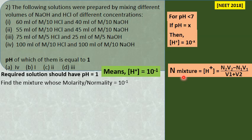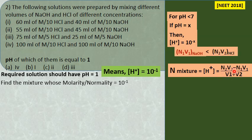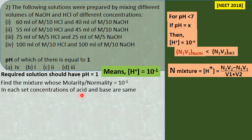The formula: concentration of H⁺ = (N2V2 minus N1V1) divided by total volume, where N2V2 of acid must be more than N1V1 of NaOH. Looking at the concentrations given: N/10 = 0.1 in each case. Volumes: combination 1 is 60 and 40, combination 2 is 50 and 45, combination 3 is 75 and 25, combination 4 is 100 and 100.